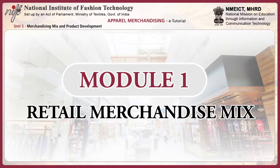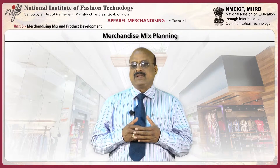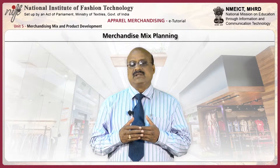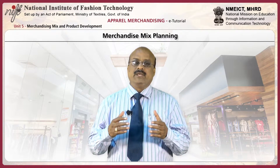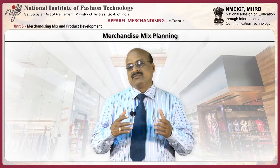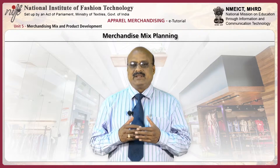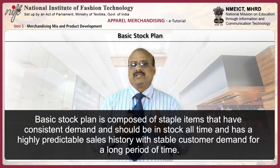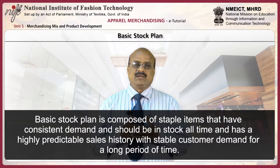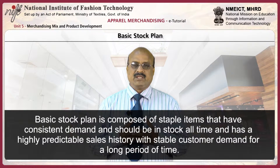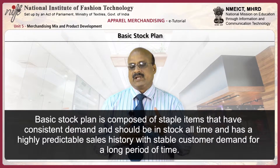The first module gives an overview of retail merchandise mix. Merchandise mix planning is a projection of the variety and quantity in detail of merchandise to be carried in stock to meet customer demand. BOM, beginning of the month, and EOM, end of the month, inventory levels are calculated from each month of plans. The basic stock plan is composed of staple items that have consistent demand and should be in stock all the time, with a highly predictable sales history and stable customer demand for a long period of time.